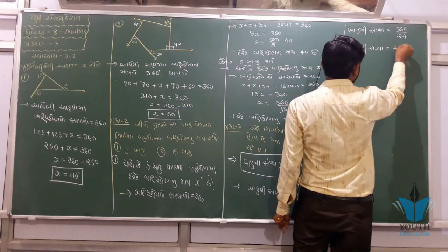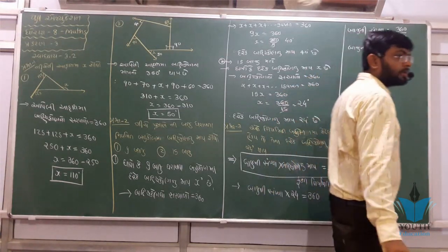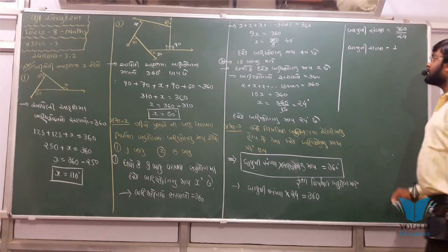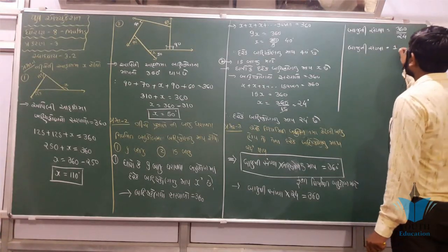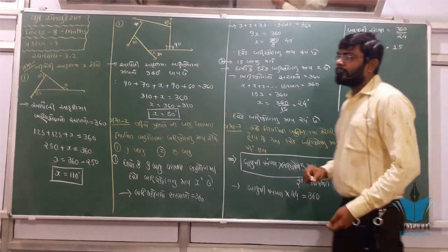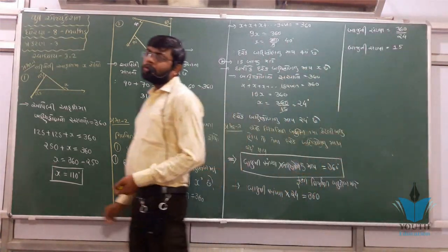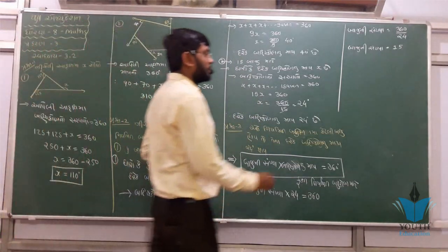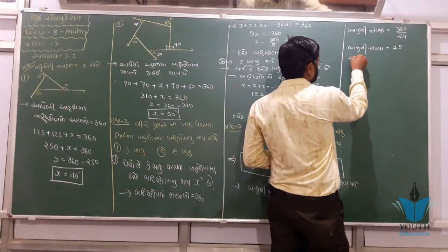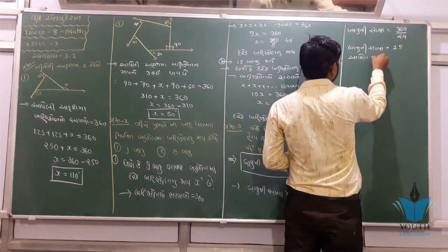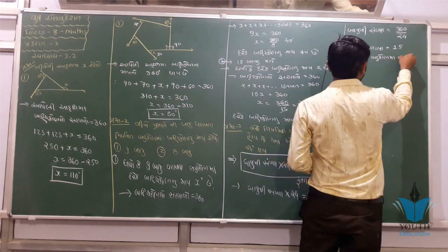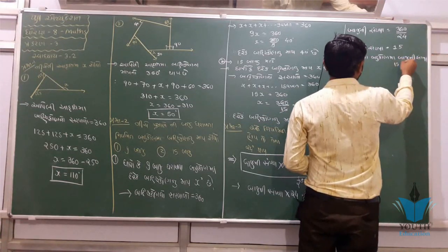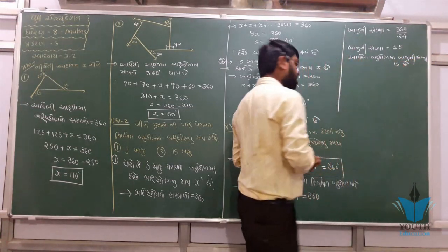360° ÷ 24 — ભાગ ચોવીસ. ચોવીસ ÷ ચોવીસ — 15 — ત્રણ્સો વીસ ÷ ચોવીસ = 15. આ આપ્યેલા બહુ-કોણ માં બાજુઓ ની સંખ્યા 15 છે.